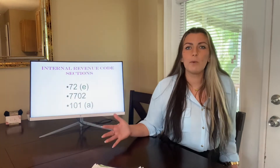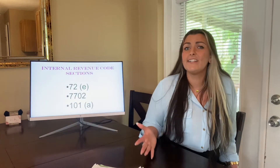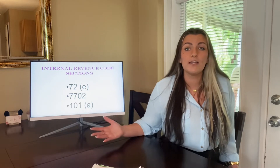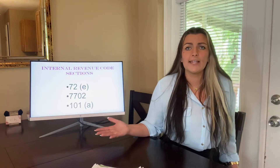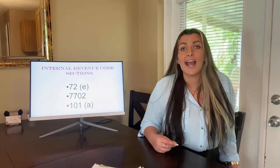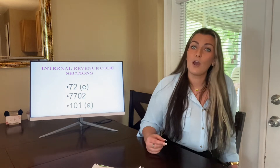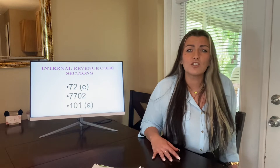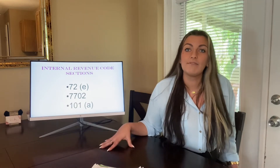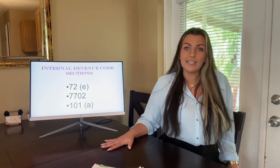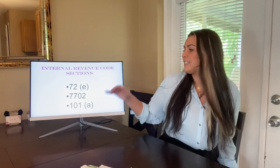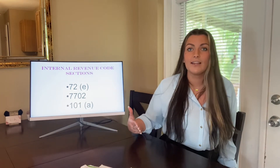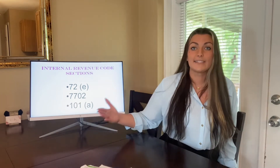In my videos before this, we went over what is an indexed universal life insurance policy, why it was created, and the internal tax revenue codes that need to be adhered to in order to properly structure and correctly fund these policies. In a life insurance policy, 72E states that we can accumulate money tax-free.